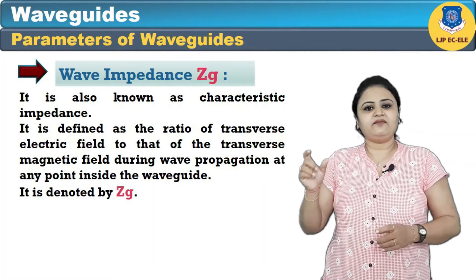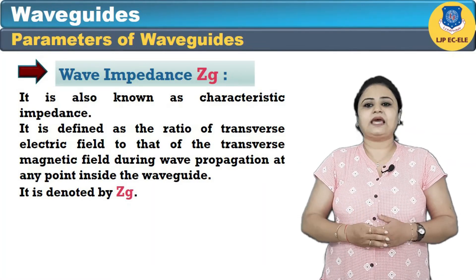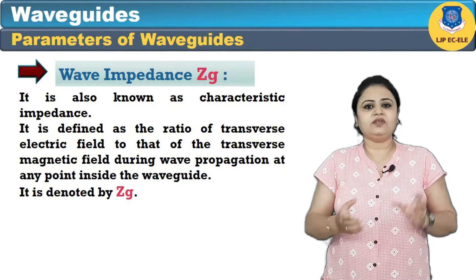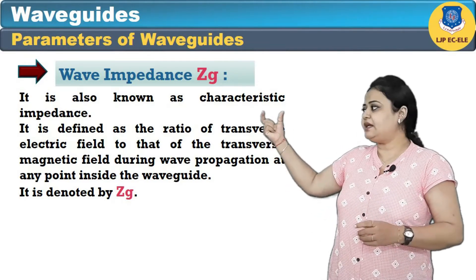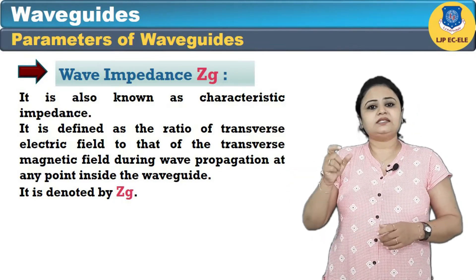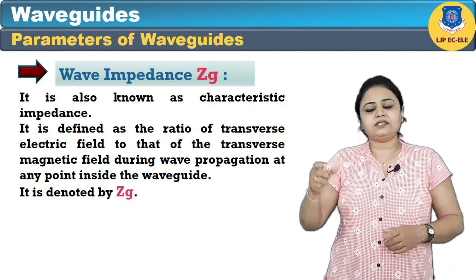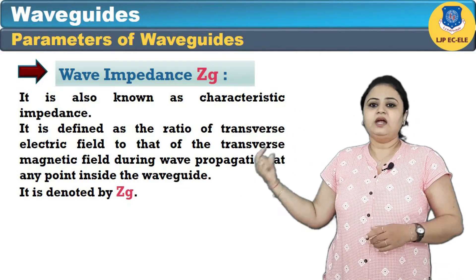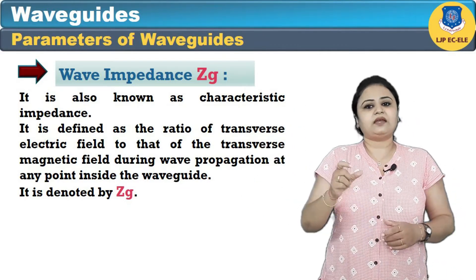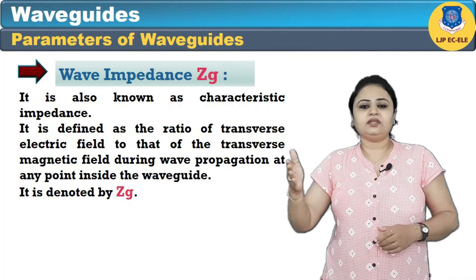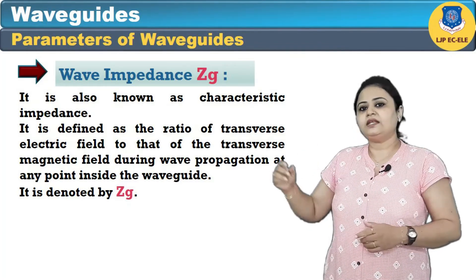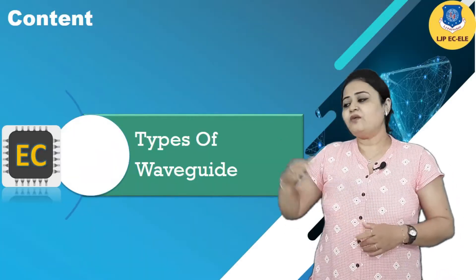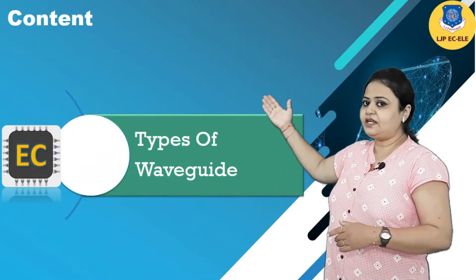The last parameter is wave impedance. It is also known as characteristic impedance, but as we are dealing with waveguides we will consider it as wave impedance. It is defined as the ratio of the transverse electric field to the transverse magnetic field during wave propagation, and it is denoted by Zg.